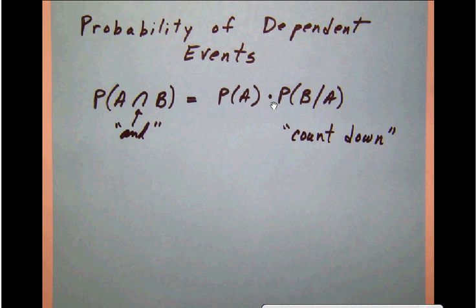We're going to take the probability of A multiplied by the probability of B given A. This notation means we're going to get the probability of B if we assume that we got what we wanted the first time.